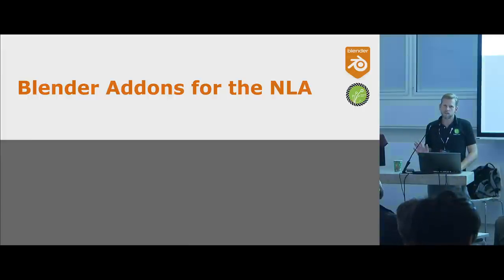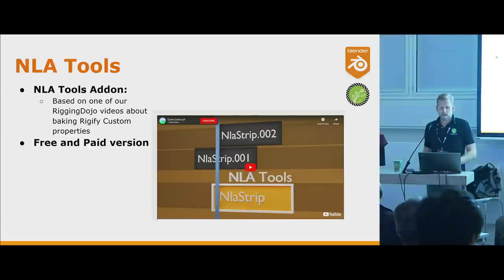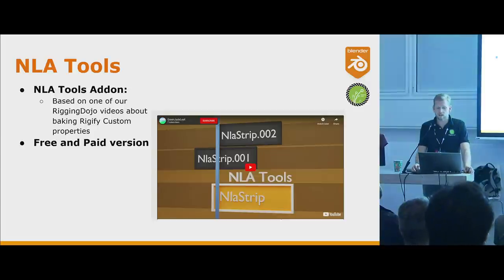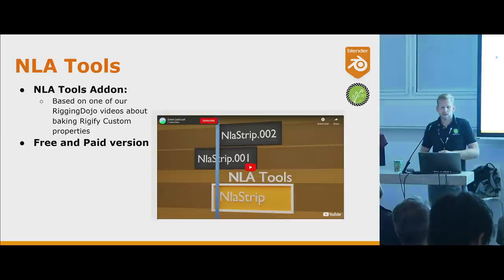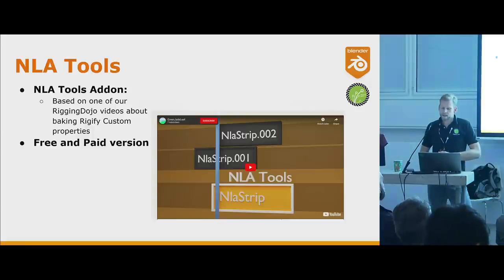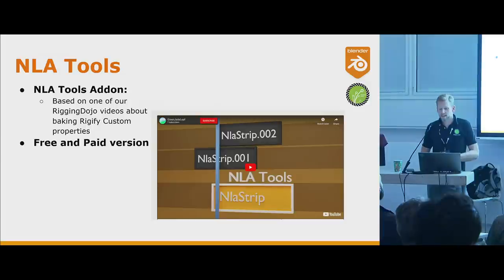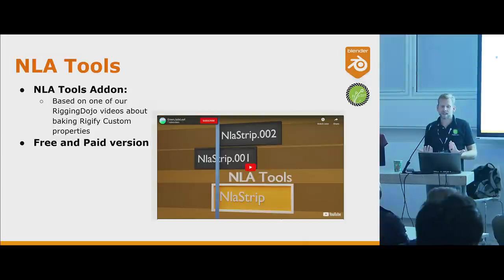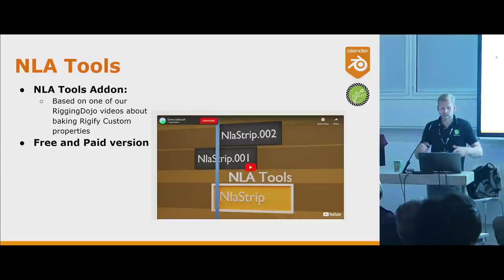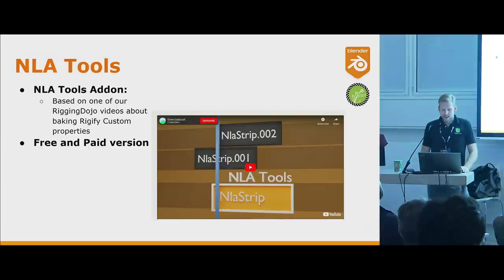You can probably just get these add-ons and leave now and be fine. NLA Tools — I found this recently. It's a small $5 add-on. The developer watched my video where I was complaining about custom properties not baking with actions, so he fixed that and added cool stuff like extracting bones. There's also a free version for Rigify users or those who just want custom properties to bake when you collapse layers or actions.